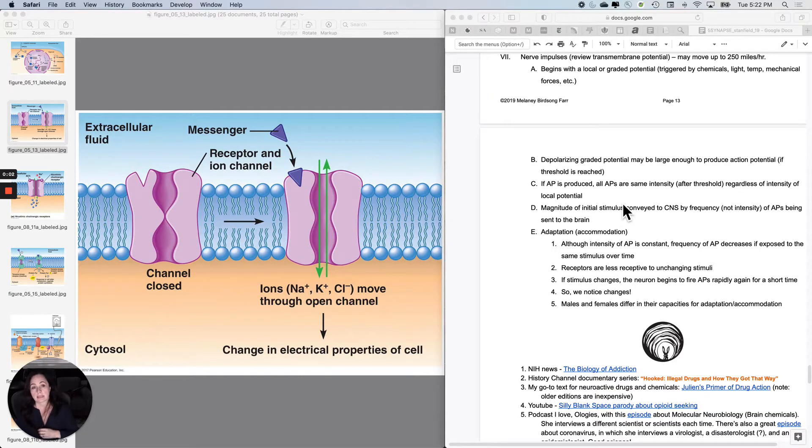The last tidbit in the synapses notes is to talk big picture about how we pay attention or attend to certain things and not others with our nervous system. All action potentials start out with a local or graded potential, which could be triggered by chemicals or light or temperature or mechanical forces or whatever.